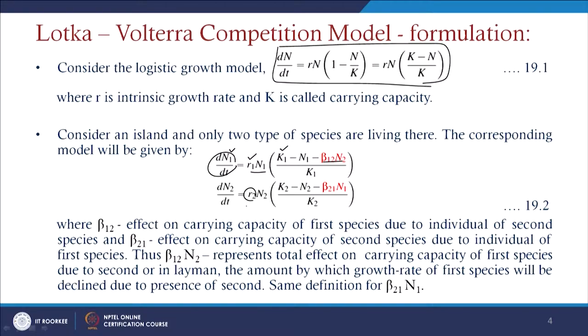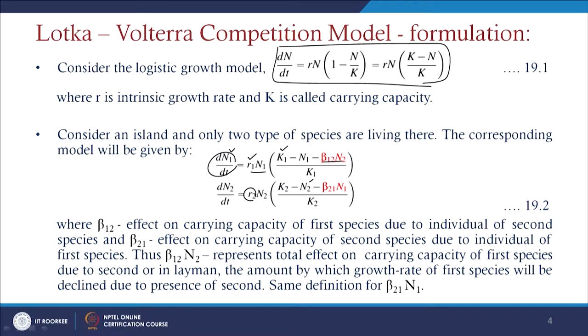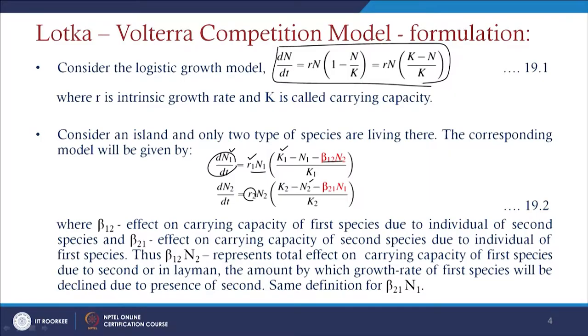Similarly for the second species, the rate of change is written as R2·n2 as the intrinsic growth rate, with n2 as the total population, affected by the presence of the first species. Here β12 represents the effect on the carrying capacity of the first species due to individuals of the second species, and β21 represents the effect on the carrying capacity of the second species due to the first. These terms restrict the total effect on carrying capacity accordingly. If β12 or β21 equals zero, one species is not affected by the other, though intra-specific competition still exists within the population.